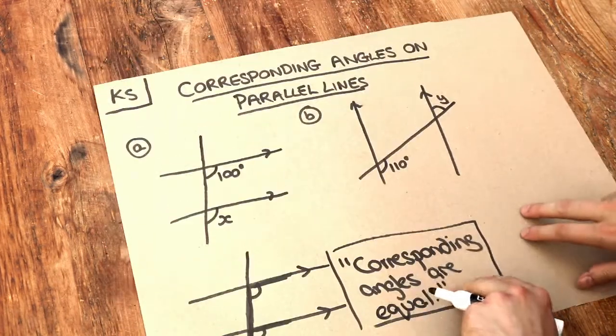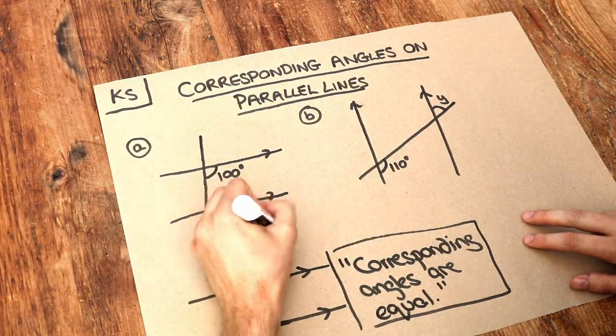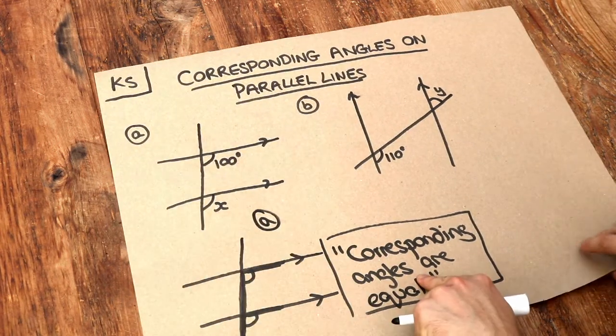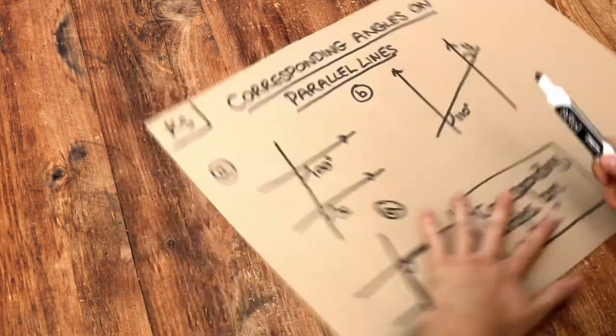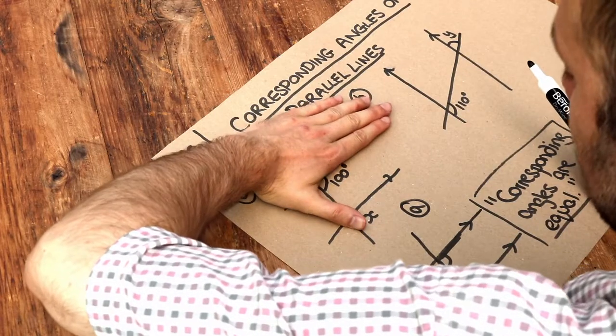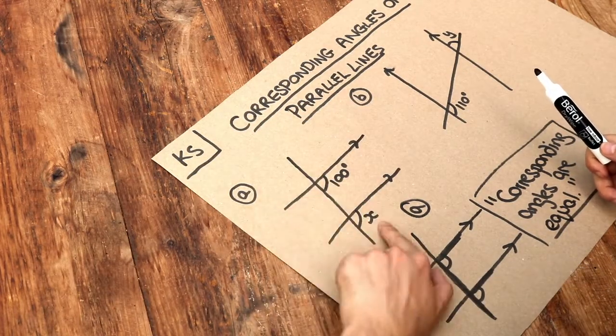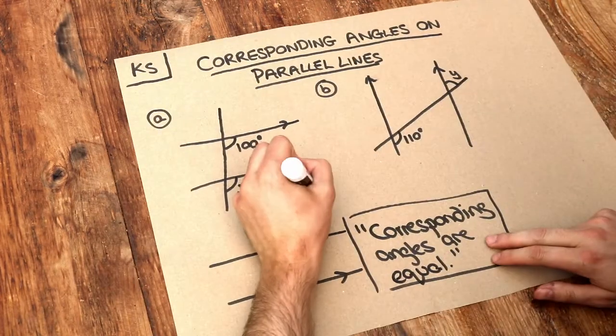So let's apply that to these problems here. Well, A is relatively easy because we can just directly use this rule. If we put our hand on the 100 and we slide our hand like this, we can see that's also going to be 100 degrees there. So X is 100.